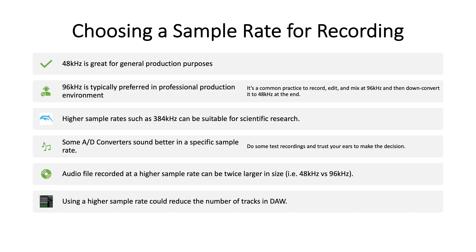96 kilohertz is typically preferred in professional production environments. It's common practice to record, edit, and mix at 96 kilohertz, and then down-convert to 48 kilohertz at the end, so that you can preserve all the harmonics in the master file. If your target sample rate is 96 kilohertz, then you might want to record at 192 kilohertz for the same reason. Using a 384 kilohertz sample rate can be suitable for studying dolphins, which are known to have extraordinary hearing abilities of up to about 150 kilohertz.